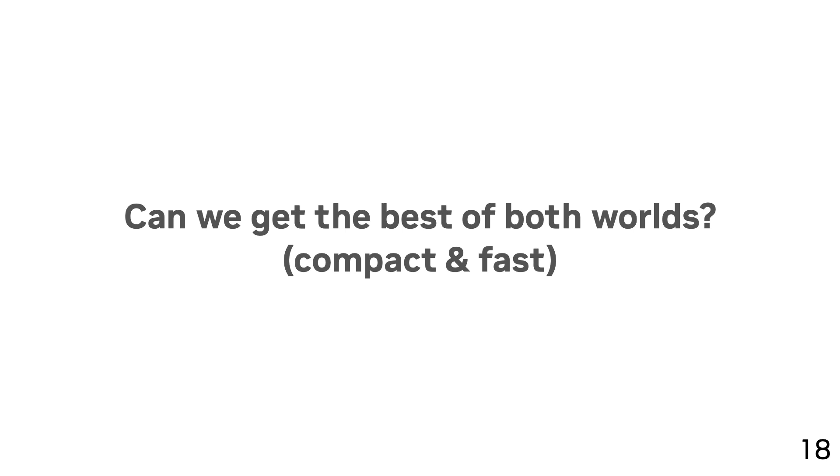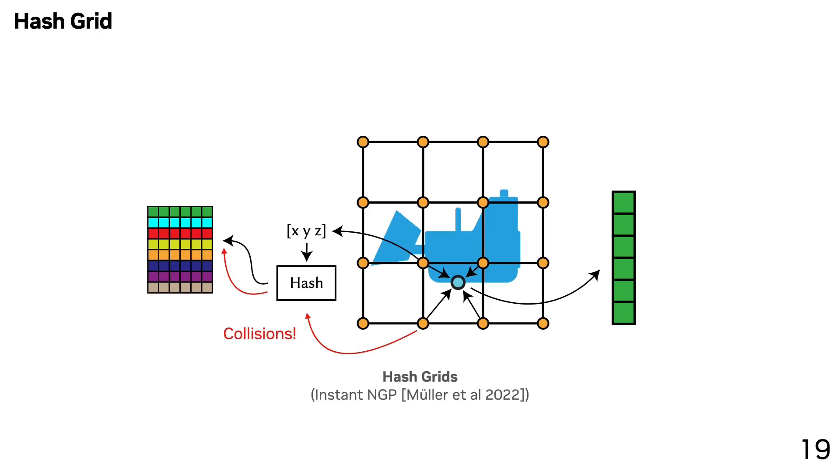So our goal is to get the best of both worlds in terms of being compact but also fast. We saw that the problem with hash grids comes from the hash collisions. We hypothesized that we can get away with a small codebook if we were able to solve the collision issue.